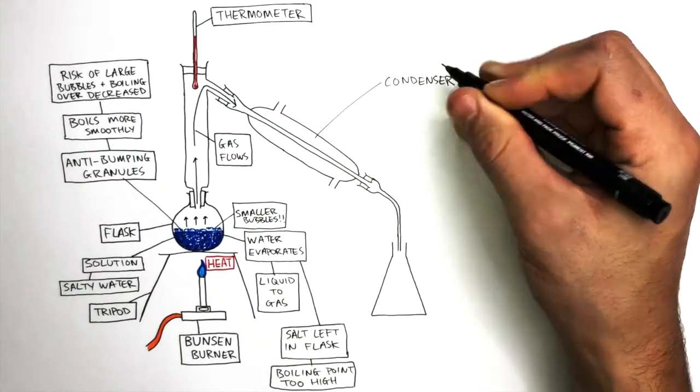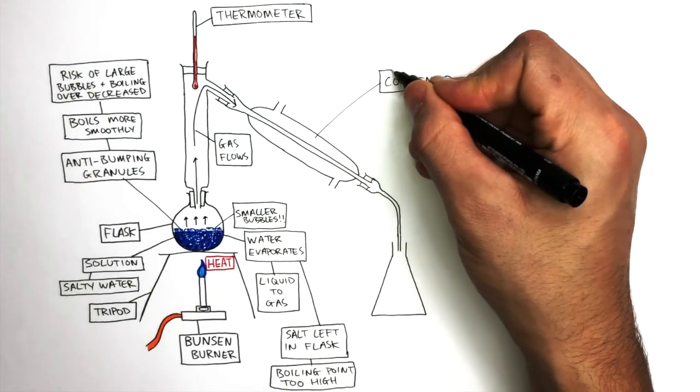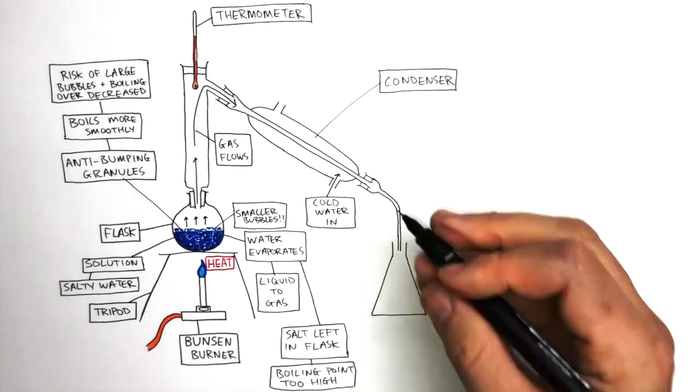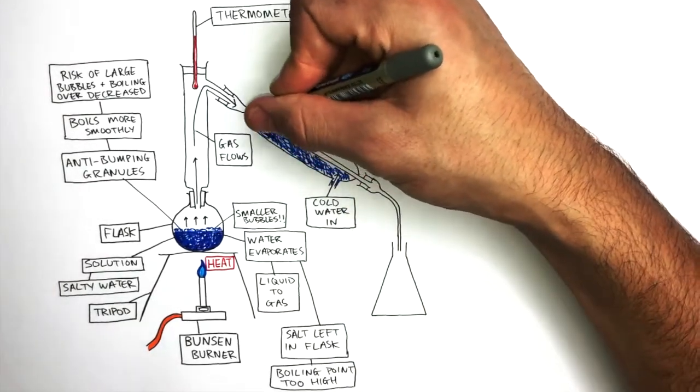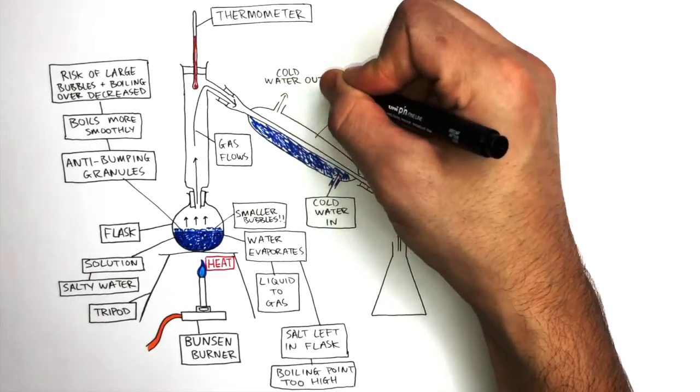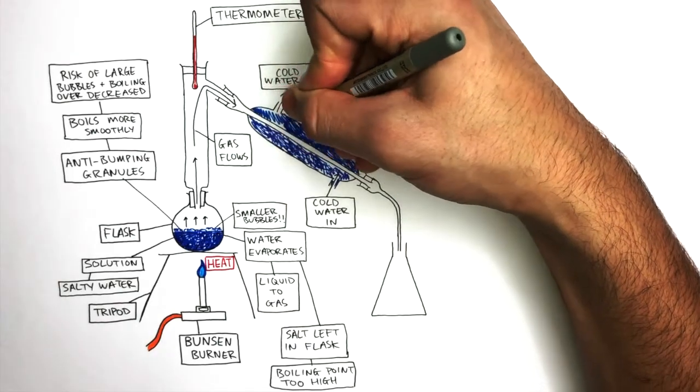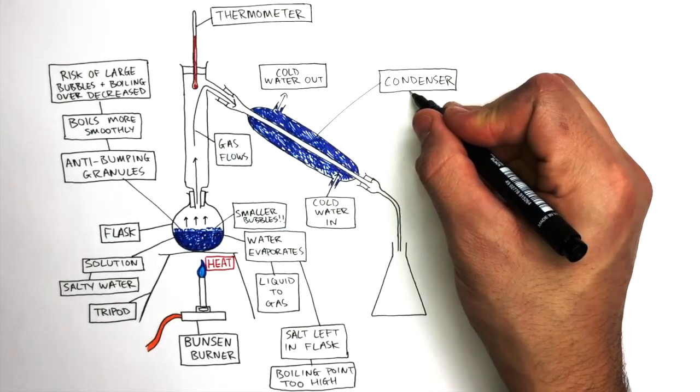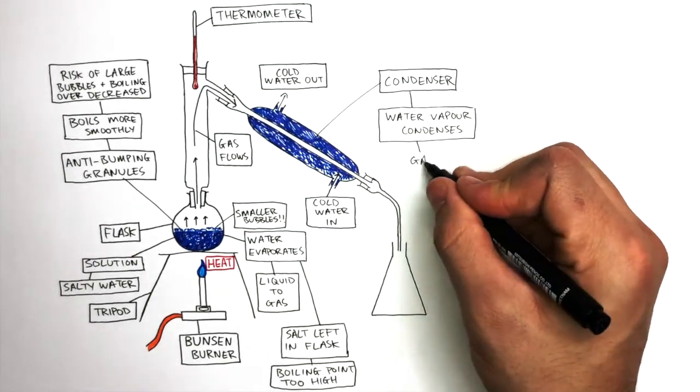This is the condenser. Its job is to condense the gas from a gas into a liquid. The cold water flows in from the bottom where it flows around the tube that the gas flows through, and then this cold water flows out from the top. At no point does this cold water ever go in the same tube as the gas flowing. So the job of a condenser is so that the water vapor condenses from a gas into a liquid.